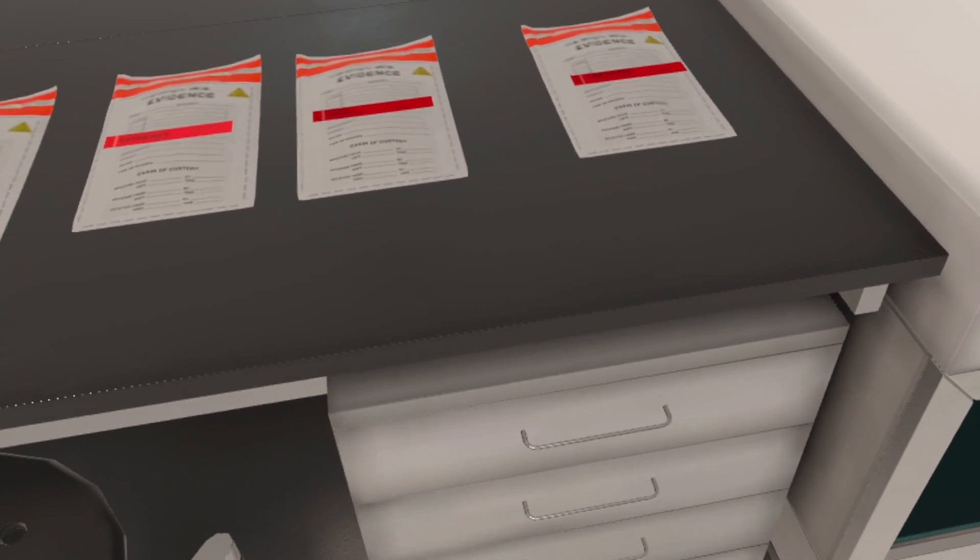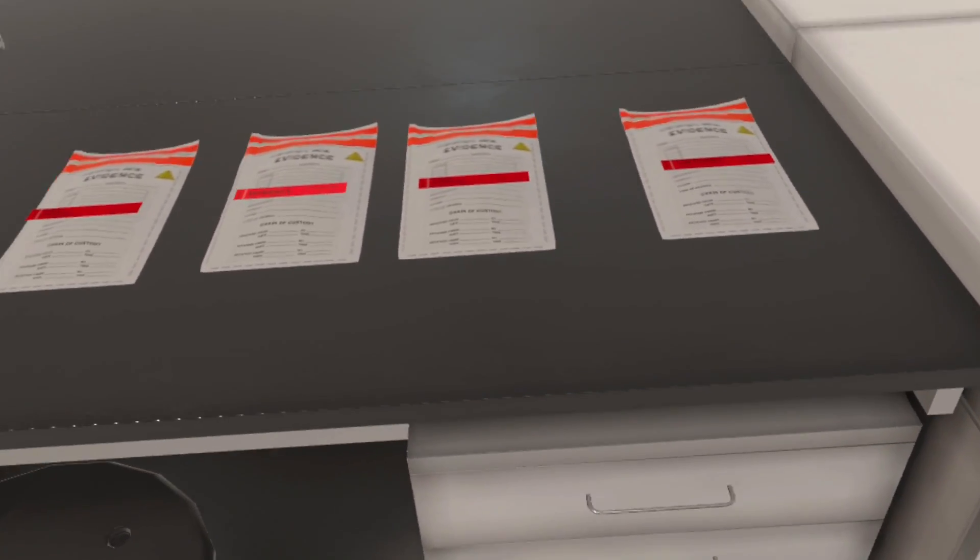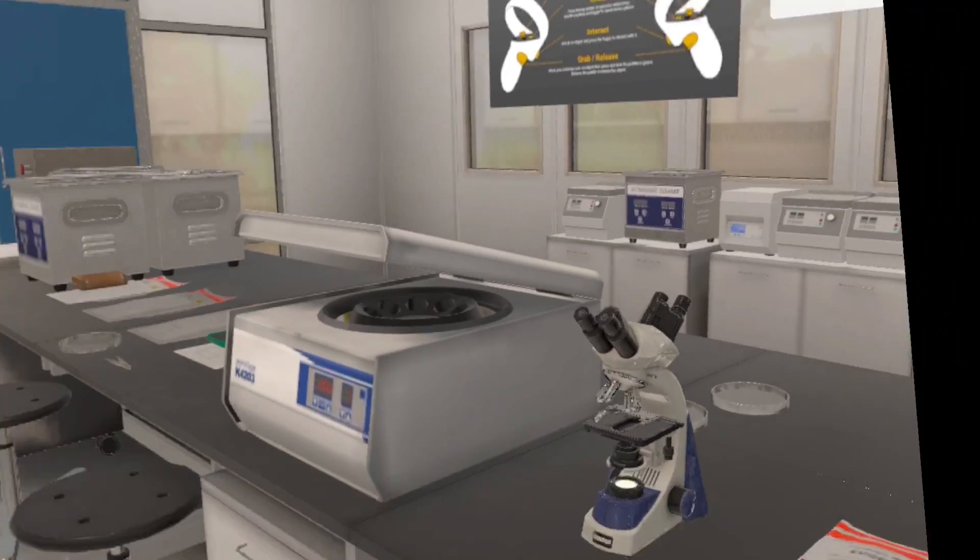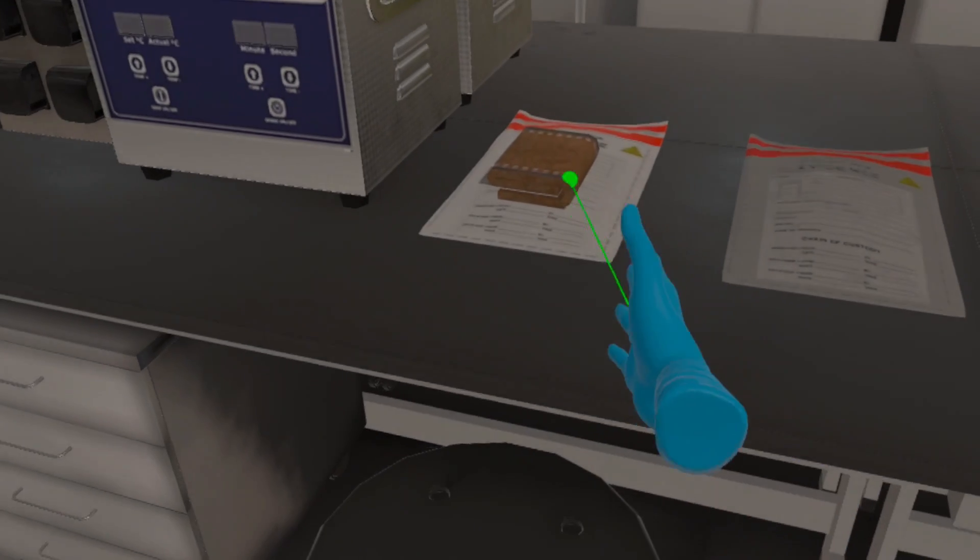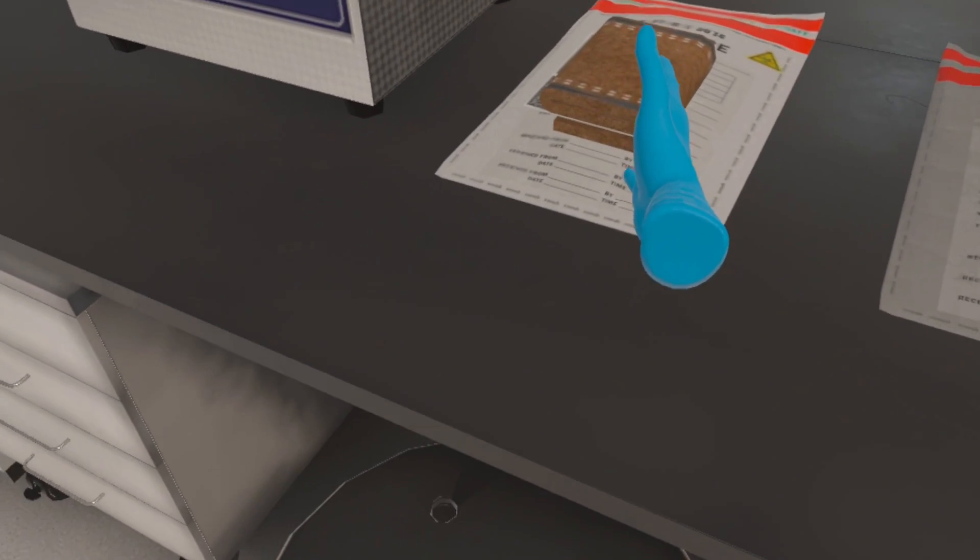Excellent! Now we need to examine the wallet for any latent fingerprints. Get the wallet from the evidence bag and place it under the UV light.